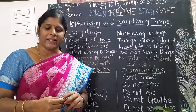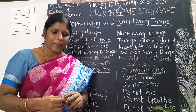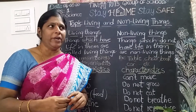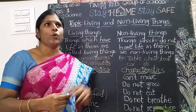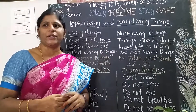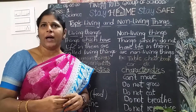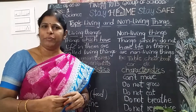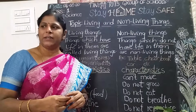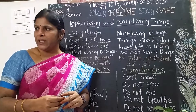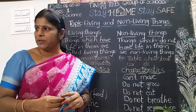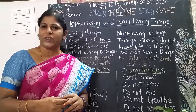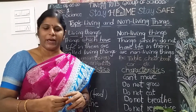What are the things around me? I can see sofa, TV, fan, refrigerator, mixer grinder, washing machine, and some photos in my house.